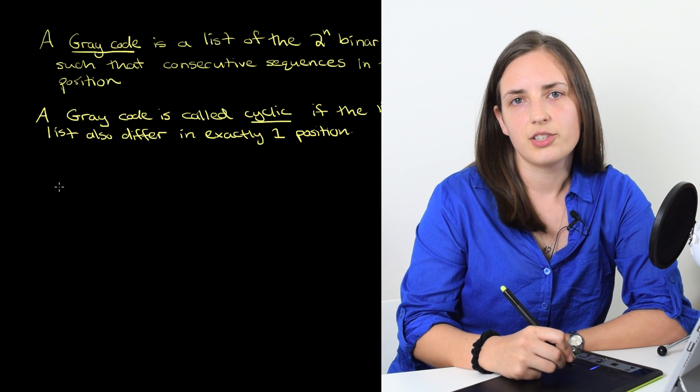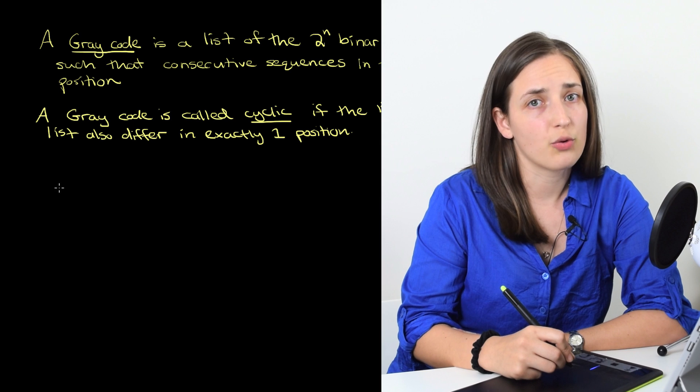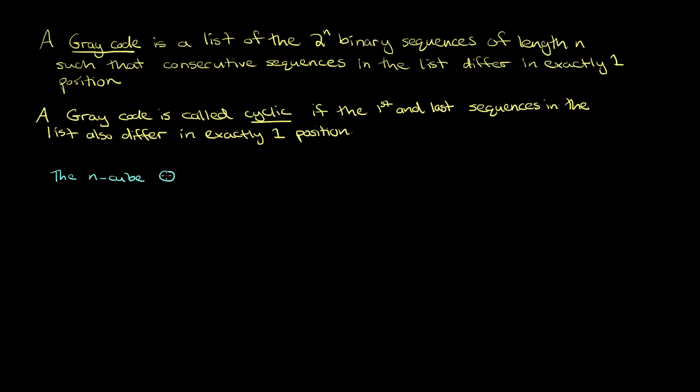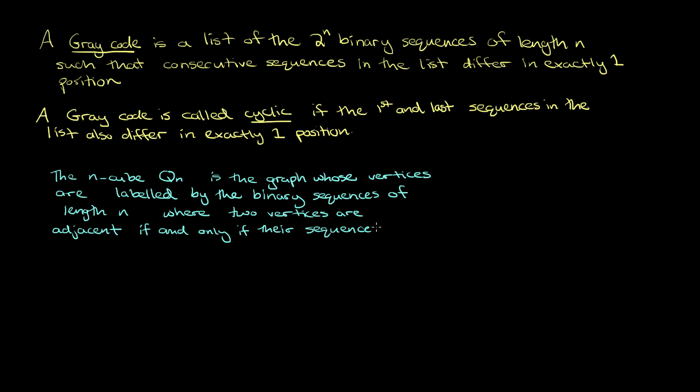Next what I want to talk about is how a gray code can be thought of in a graph-theoretic point of view. The n-cube denoted qn is the graph whose vertices are labeled by the binary sequences of length n, where two vertices are adjacent if and only if their sequences differ in exactly one position.